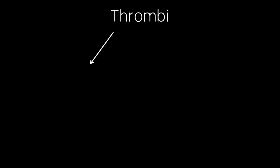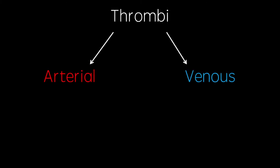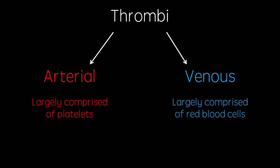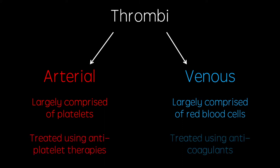Thrombi can form in either the arterial or venous systems. Arterial thrombi are mostly made up of platelets, whereas venous thrombi are mostly made up of red blood cells and clotting factors. For those reasons, arterial thrombi are treated using antiplatelet therapies and venous thrombi are treated using anticoagulants.